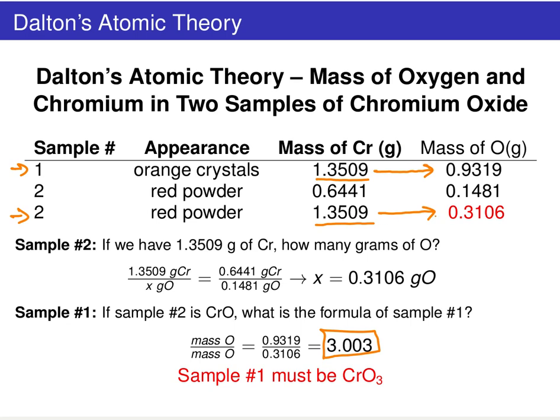Sample two has a one-to-one ratio, but for the same amount of chromium we find that the mass of oxygen in sample one is roughly three times greater. That means the chemical formula must be chromium with three oxygens — CrO₃.